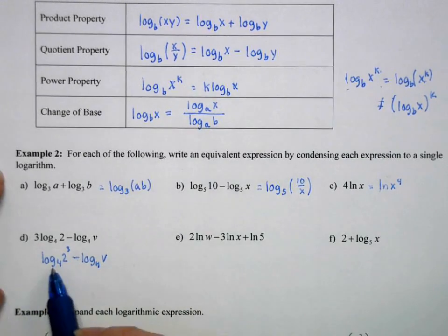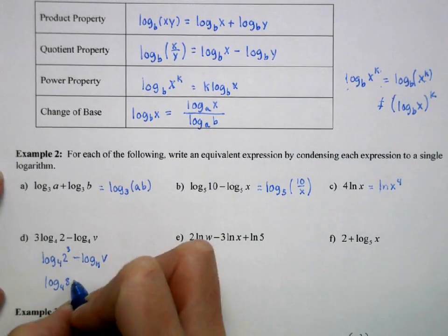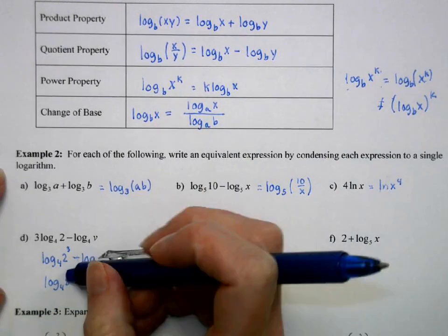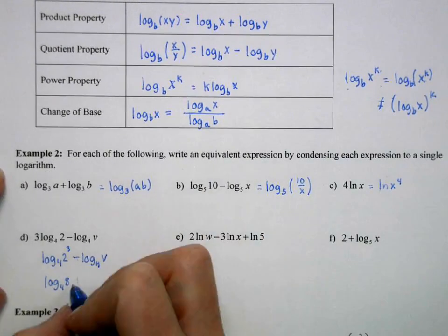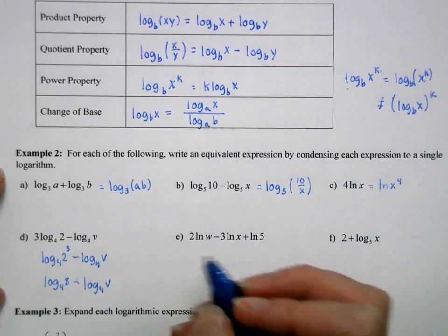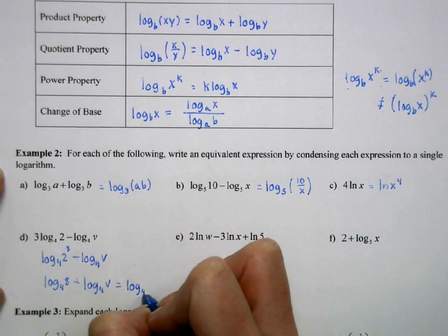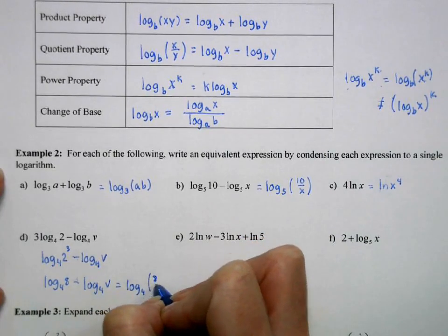Okay, well this is the same as log base 4 of 8 minus log base 4 of b. Okay, and then I can use that quotient property. So this is equivalent to log base 4 of 8 over b.